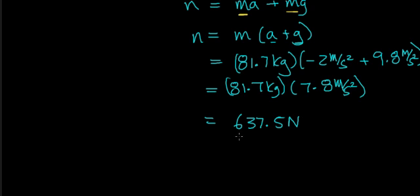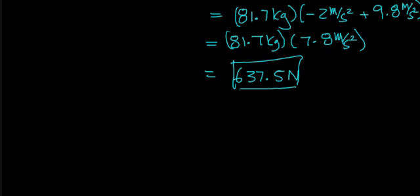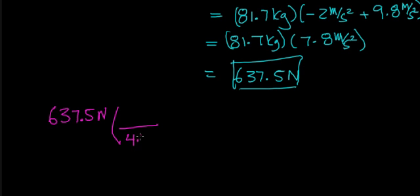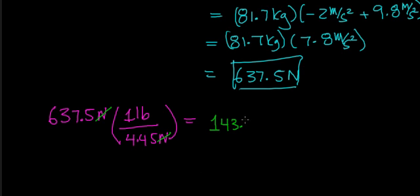Your weight decreases as the elevator begins to slow down. Converting 637.5 Newtons to pounds — using the conversion that 4.45 Newtons equals one pound — the units of Newtons cancel out and you get 143.3 pounds. So your weight has decreased by about 37 pounds.